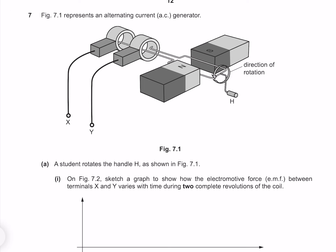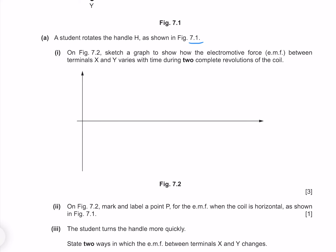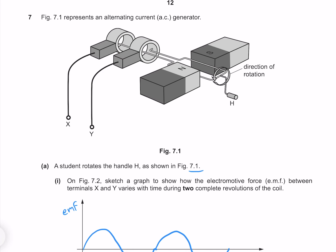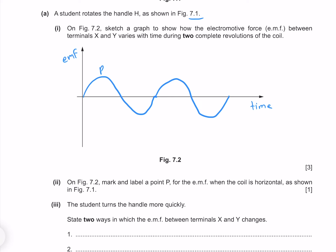Figure 7.1 represents an alternating current AC generator. A student rotates the handle H. On figure 7.2 sketch a graph showing how the EMF between terminals X and Y varies with time during two complete revolutions. Because this is an alternating current we have a sinusoidal relationship, showing two full wave cycles. When our coil is horizontal it is cutting across the maximum amount of field, so we get maximum EMF — point P can be at any peak or trough.